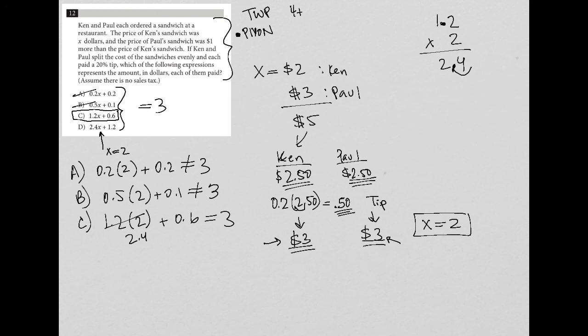Whenever I use plug in your own number though, I do become a little hesitant to just choose the first one that works. So I'm going to also try choice D just to make sure. And I get 2.4 times two plus 1.2. 2.4 times two is 4.8. 4.8 plus 1.2 is not equal to three. So choice C is the best answer here.